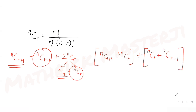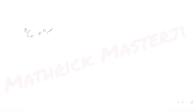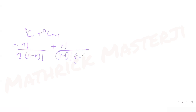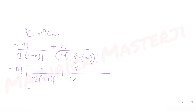Now let's derive the rule for nCr + nCr-1. Writing it out: nCr = n! / (r! × (n−r)!) and nCr-1 = n! / ((r−1)! × (n−r+1)!). Taking n! as common, we have: n! × [1/(r! × (n−r)!) + 1/((r−1)! × (n−r+1)!)].